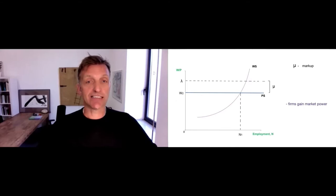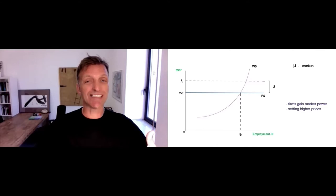How is this significant for the average worker? When you talk about market power in the goods market, firms set higher prices - but what does that mean for the worker? What we find in the research is that there are enough dominant firms that are large enough, and they are setting prices that are too high. What this implies is that they're actually producing too little.